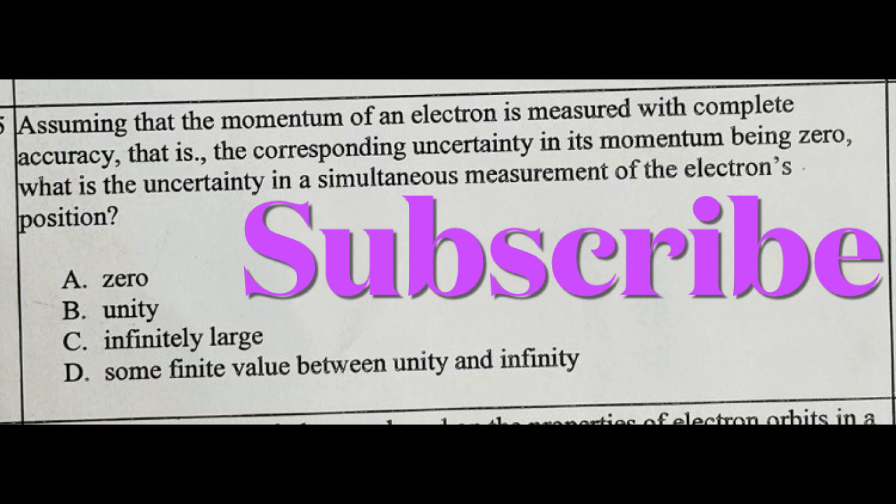what is the uncertainty in a simultaneously measured electron's position? The options given are: A - zero, B - unity, C - infinitely large, and D - some finite value between unity and infinity.